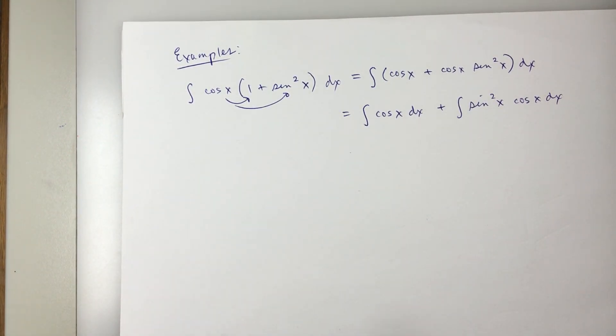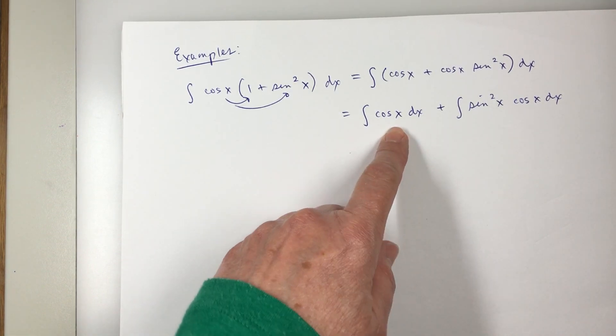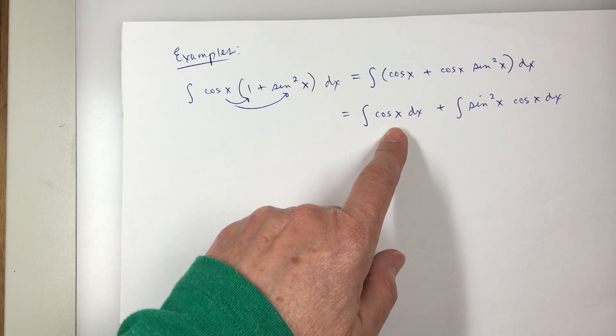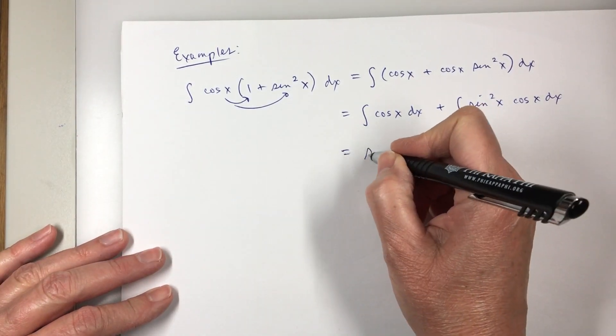So I know what the first one is. The antiderivative of cosine x is sine x.